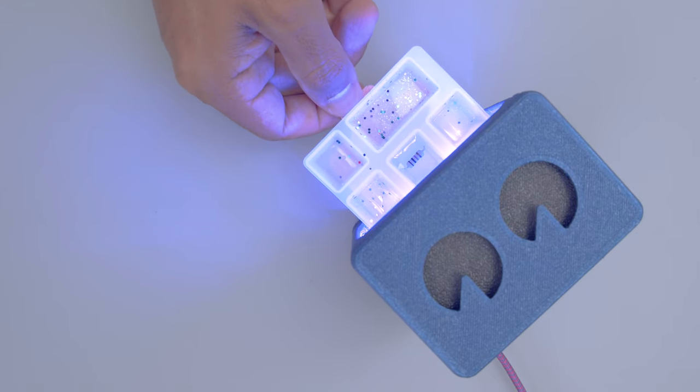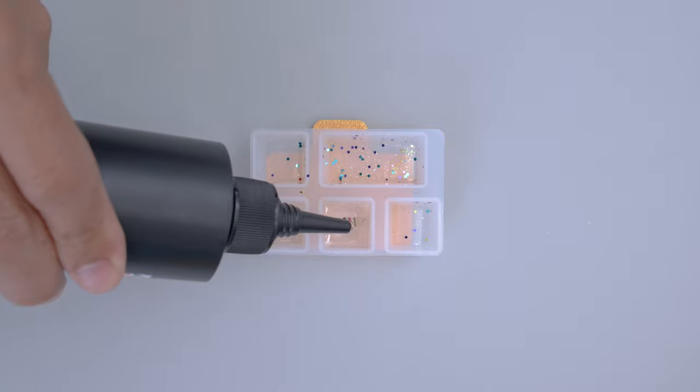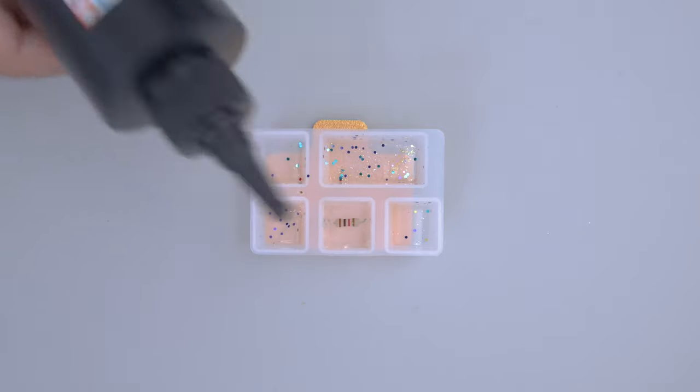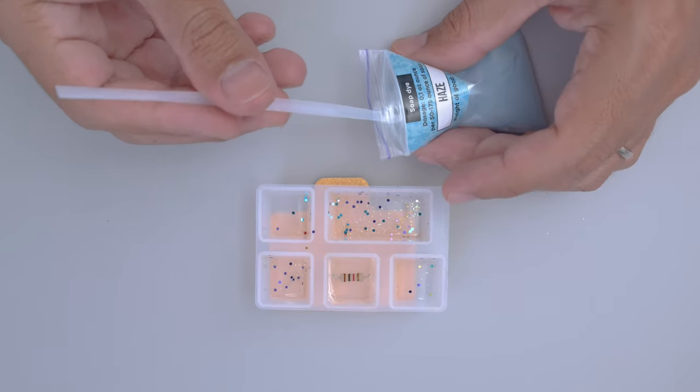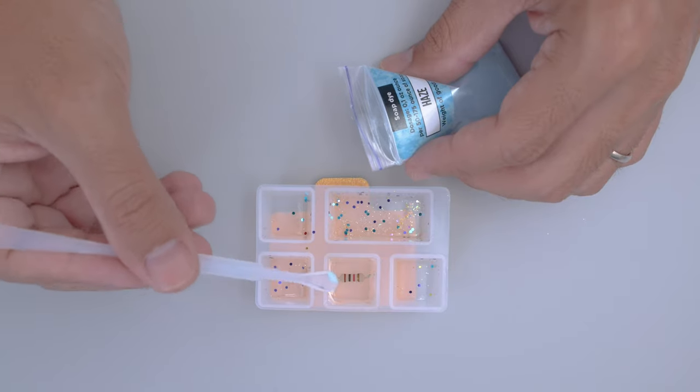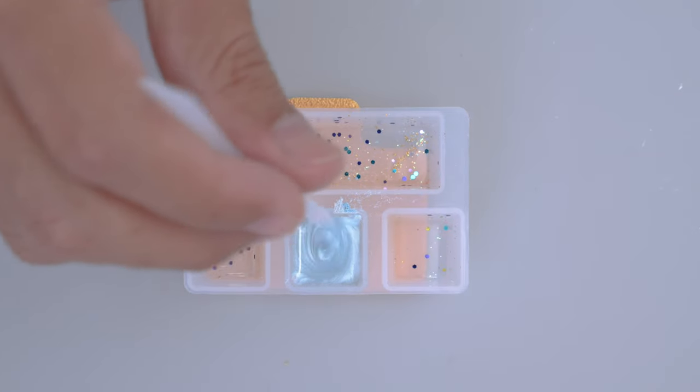Once again, we'll add more resin on top. This time we can start to add mica powder using a silicone spoon. You want to mix and stir it up nicely so the pigment blends into the resin. This also helps get rid of any air bubbles.